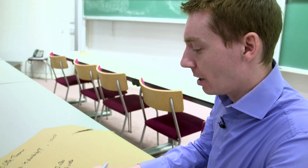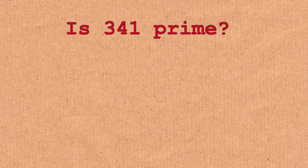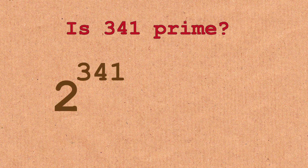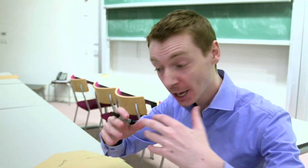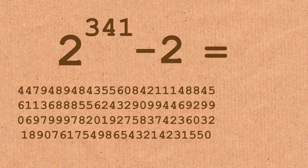This is what Fermat proved in the 17th century — absolutely true for all primes. Let's try another number: 341. Does that pass the test? 2 to the power of 341 minus 2 — that's going to be a really large number. Computers have methods that make this easier. I can tell you that this number is divisible by 341. Thumbs up — it's passed the test.